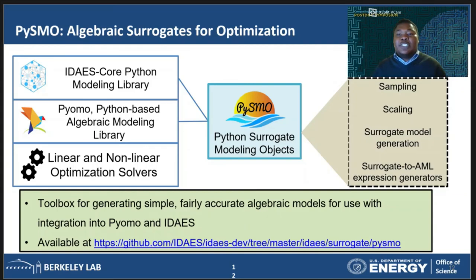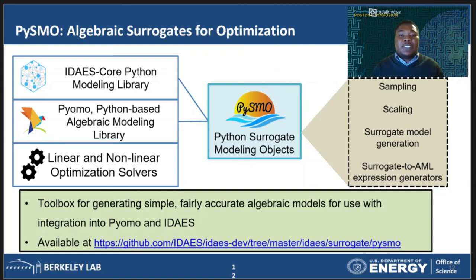One of the products of the work that I have been doing is that we've developed a library for doing all of this within IDES. We've called the library PRISMO — Python Surrogate Modeling Objects. The library is built into IDES on top of PyOMO, which allows us to take advantage of PyOMO's gradient-based solvers and optimization capabilities. The library implements a number of tools needed for generating accurate surrogates and integrating them into IDES — among other things, tools for sampling, data scaling, and surrogate generation. The library provides a breadth of capabilities suitable for a variety of scientific problems.